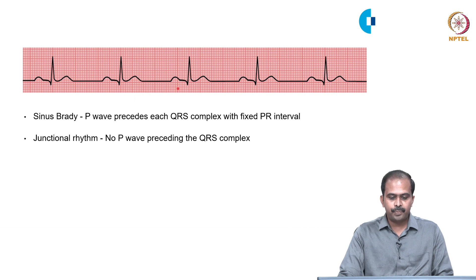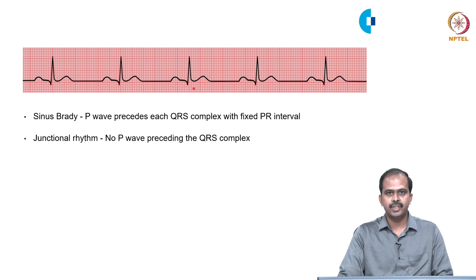If there is no P wave preceding the QRS complex, then it is called junctional rhythm.